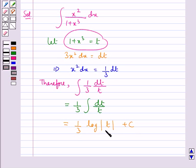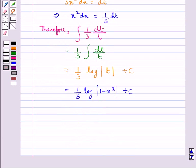Now here we take t equal to 1 plus x cubed. So this is equal to 1 upon 3 log modulus 1 plus x cubed plus c.